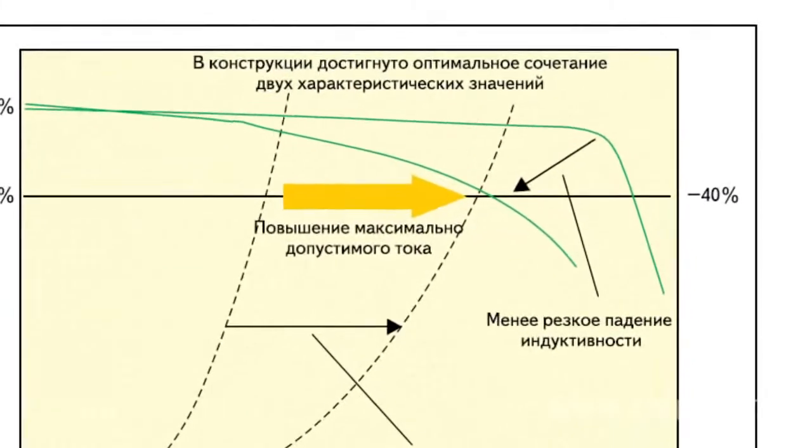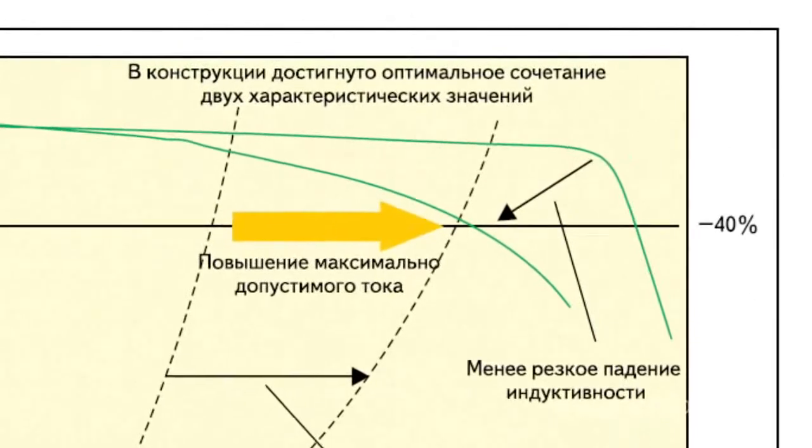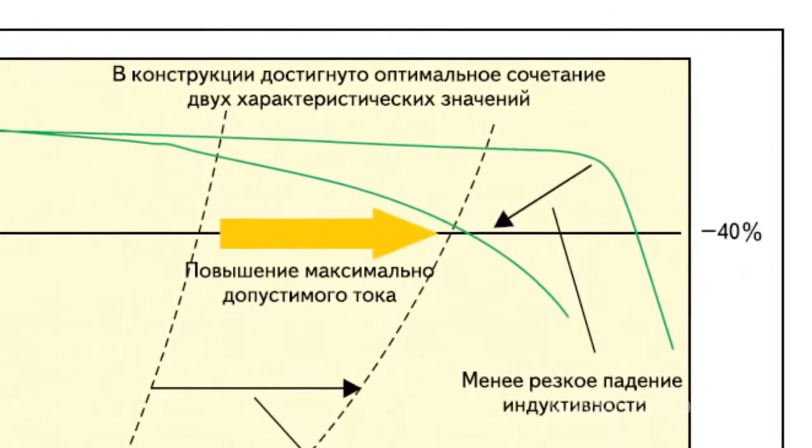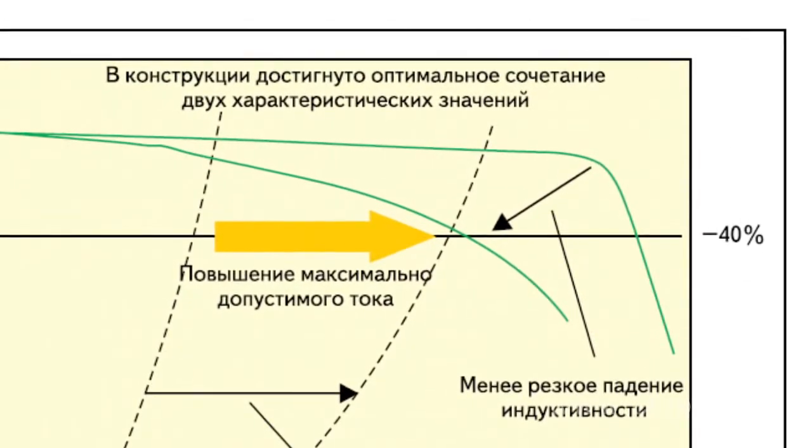Both parameters were improved by the optimization of the structure and the magnetic powder loading. In the construction of Murata's power inductors, an optimal combination of these two parameters has been achieved, allowing the greatest maximum current value to be reached.